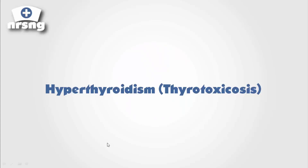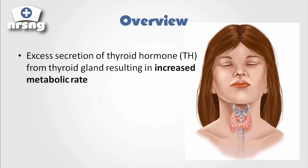Hyperthyroidism is really pretty simple to understand. The best way to understand it is to understand where this condition is occurring from and what thyroid hormone really does within the body. Hyperthyroidism is an over-secretion of thyroid hormone, which obviously originates from the thyroid gland — which we can palpate right along our trachea. This increased secretion of thyroid hormone leads to an increased metabolic rate. That is the key concept: hyperthyroidism is truly just an increased metabolic rate within the patient.